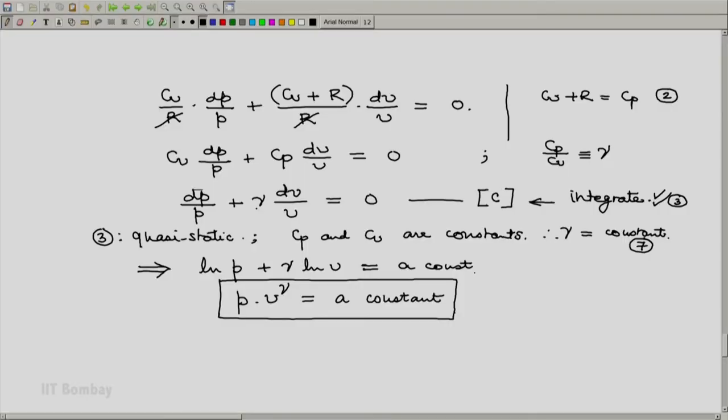Now remember that we have finally come to this derivation. But do not jump to the conclusion that an adiabatic process means PV raised to gamma is constant. Remember that the conditions we have is that we have a closed system, second thing we had an ideal gas, the third specification was that it is a quasi-static process, it was also given to be an adiabatic process. And then we made an assumption.